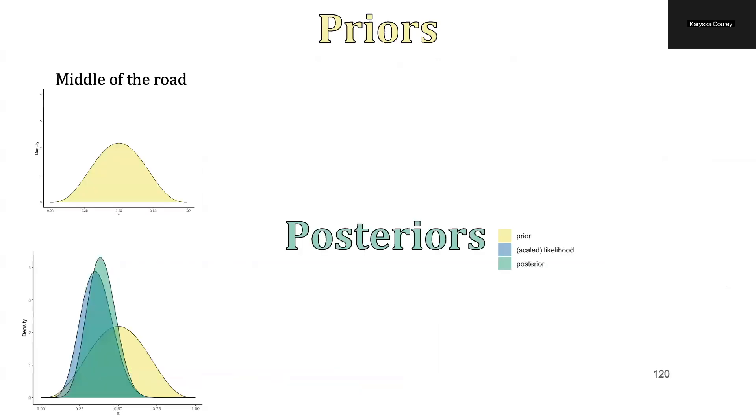So now to get our posterior distribution, we are not just looking at our prior or our likelihood, but we are actually multiplying these distributions together to get our new updated belief about the population proportion of U.S. adults with a tattoo. So if these are the possible values of theta, or the possible population proportions of U.S. adults with a tattoo, we observed that 7 out of 20 people have a tattoo, this would be our resulting posterior distribution.